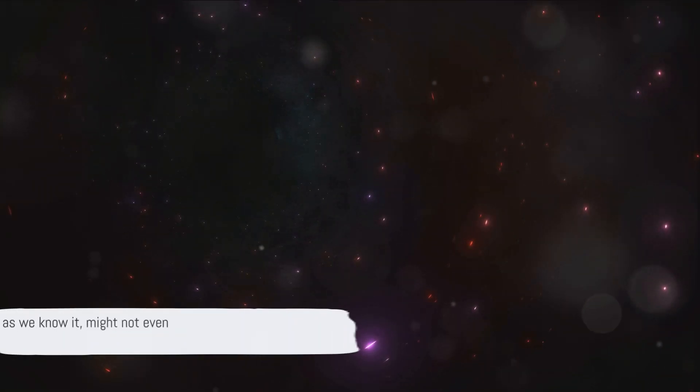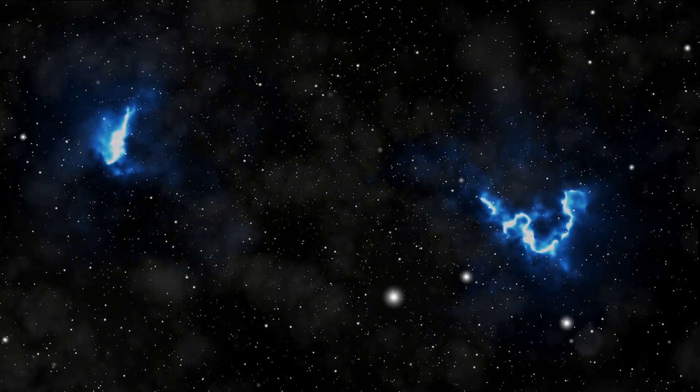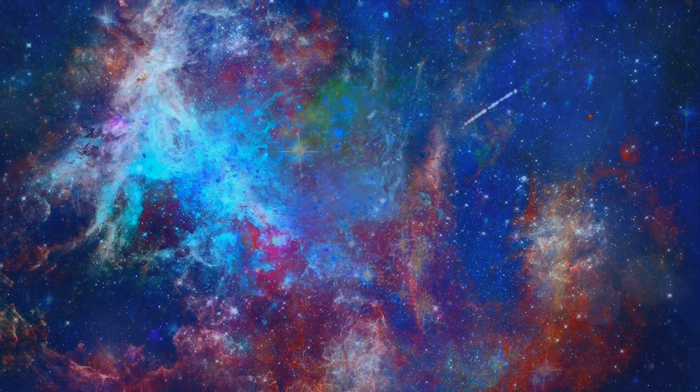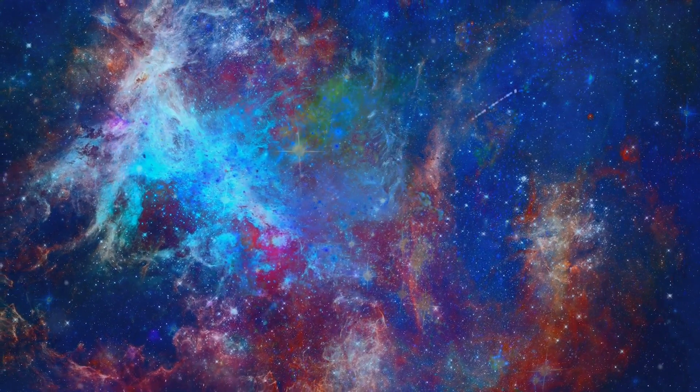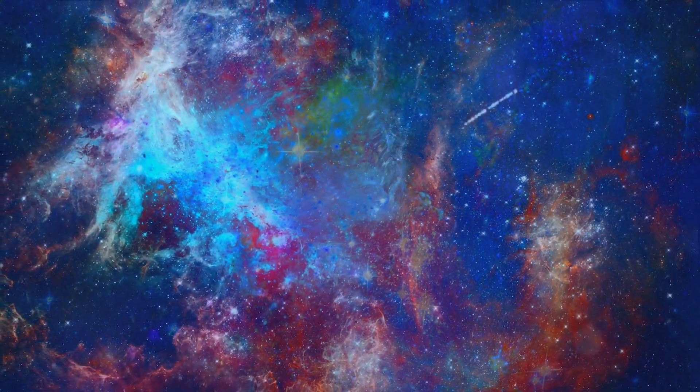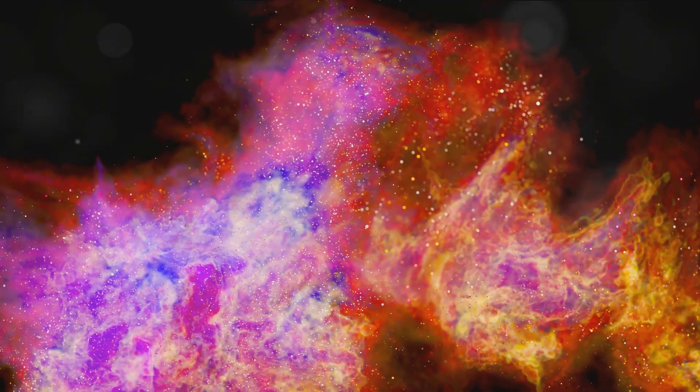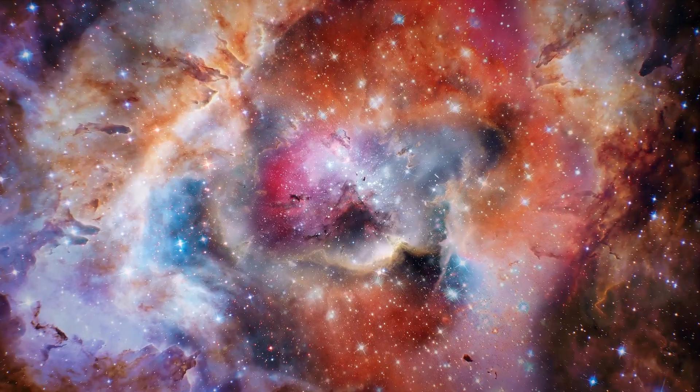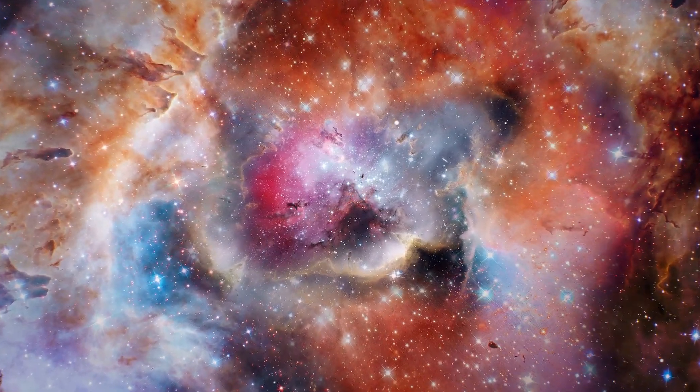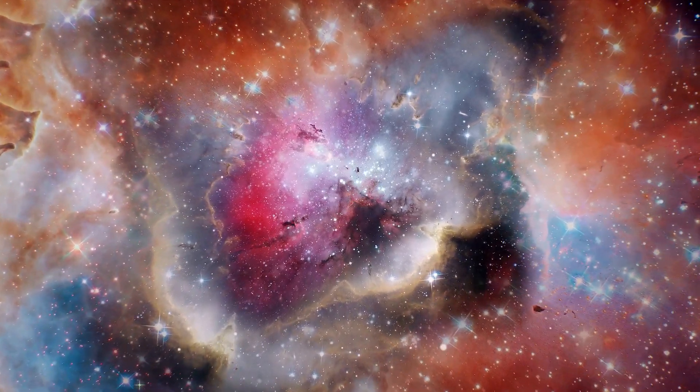In this universe, time as we know it might not even exist. In a universe without a Big Bang, how would galaxies, stars and other celestial structures come into existence? Picture a universe that didn't burst into existence from a single point, a universe without a Big Bang. The formation of stars and galaxies in such a universe is a complex and intriguing puzzle. In the universe as we know it, stars are born from the gravitational collapse of dense regions within molecular clouds, which are vast accumulations of cold, dense gas found in interstellar space. These collapsing regions form protostars, which evolve into stars as nuclear fusion ignites in their cores.